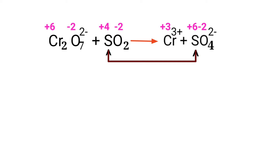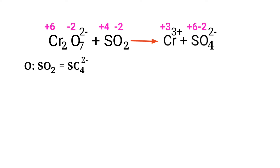In this equation, sulfur has a charge of +4 and it is changing to +6, so sulfur is being oxidized. The chromium has a charge of +6 and it is changing to +3, so chromium is being reduced.